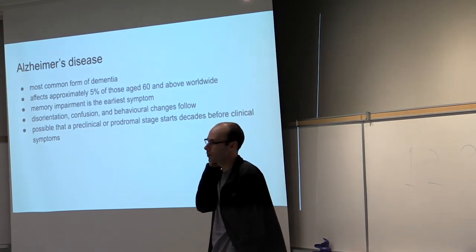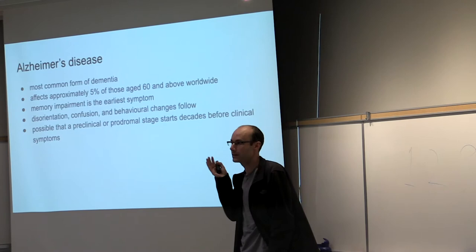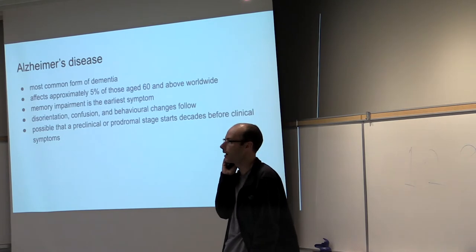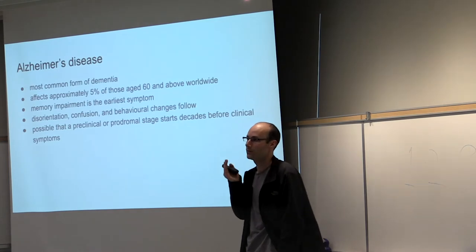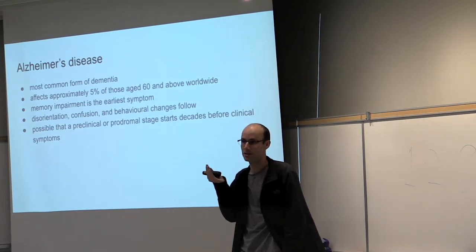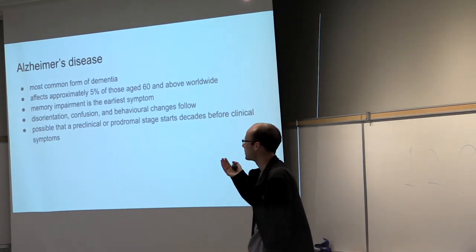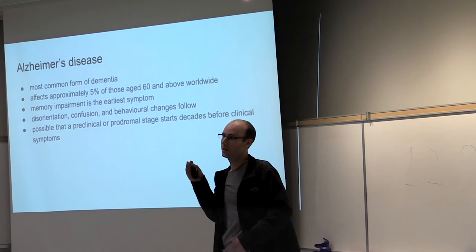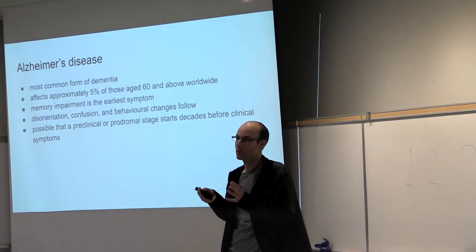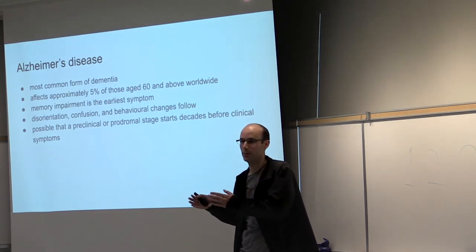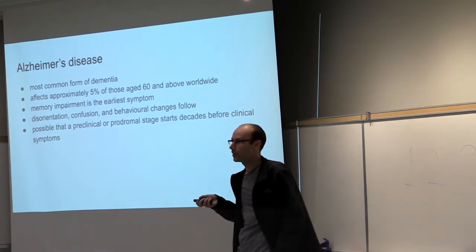This study is focused on Alzheimer's disease. It's a very devastating disease — the most common form of dementia, affecting 5% of those over 60. It starts with memory impairment, then worsens with confusion and behavioral change. There are no cures, though some treatments can slow progression. One thing that comes up in research is the possibility of a preclinical or prodromal stage — Alzheimer's disease may start 20 years before you show up in the hospital with memory impairments.